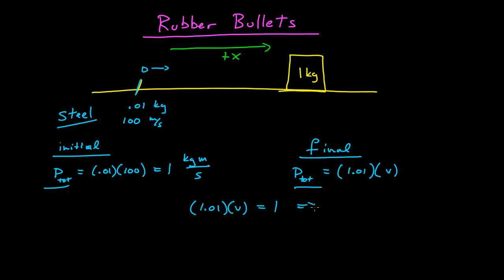Which means that now the velocity of the block is about 1 meter per second. As we've calculated, it's 1 divided by 1.01, so it's about 1 meter per second. And then, depending on friction, it'll go a certain distance. So in this case, our steel bullet imparted on our large block a velocity of 1 meter per second by hitting it.